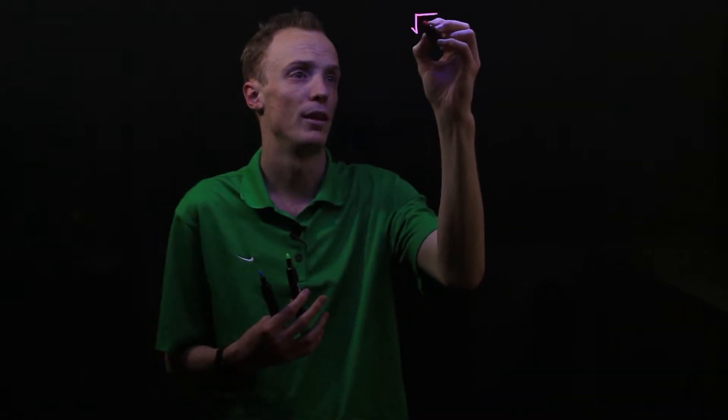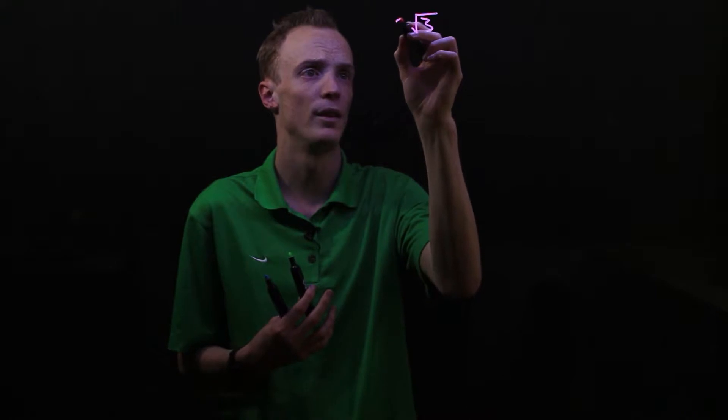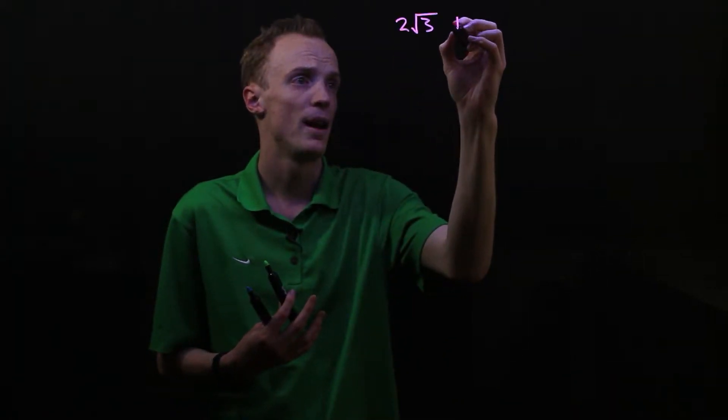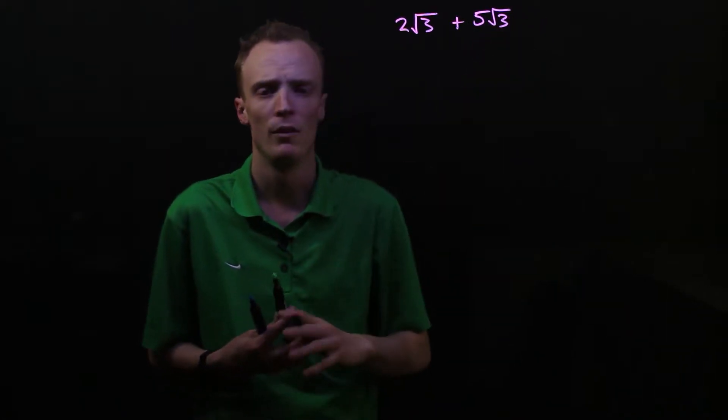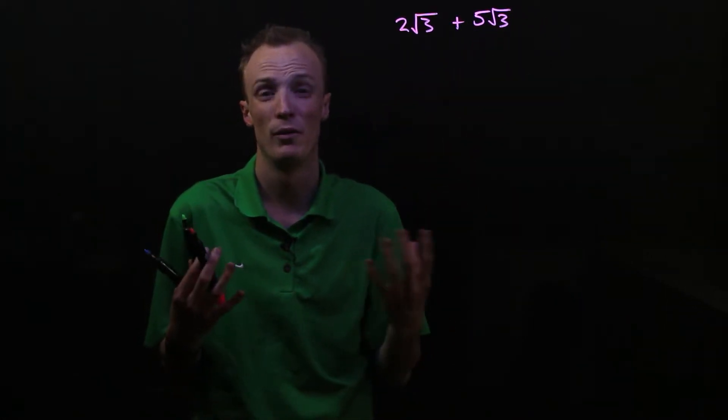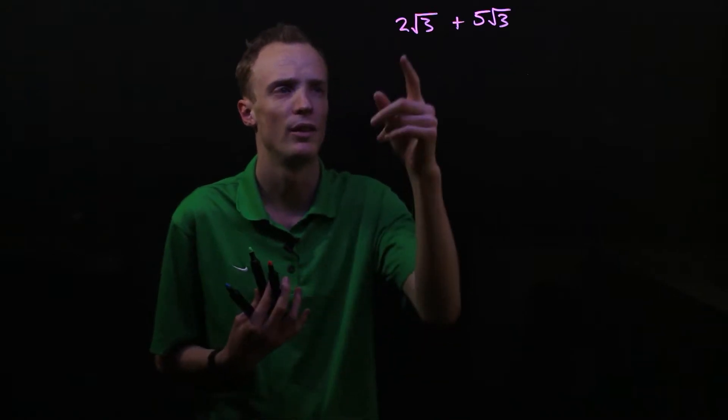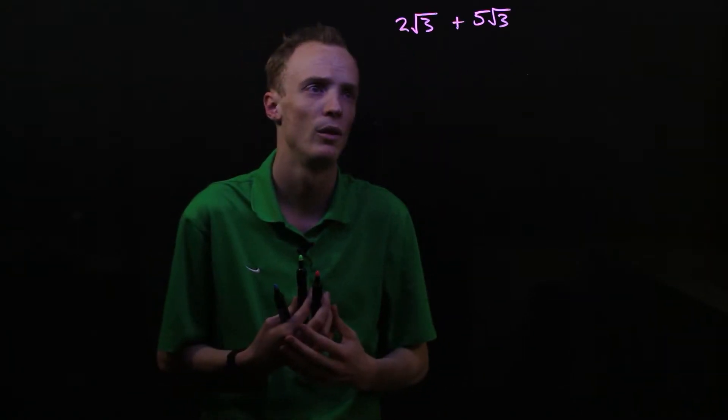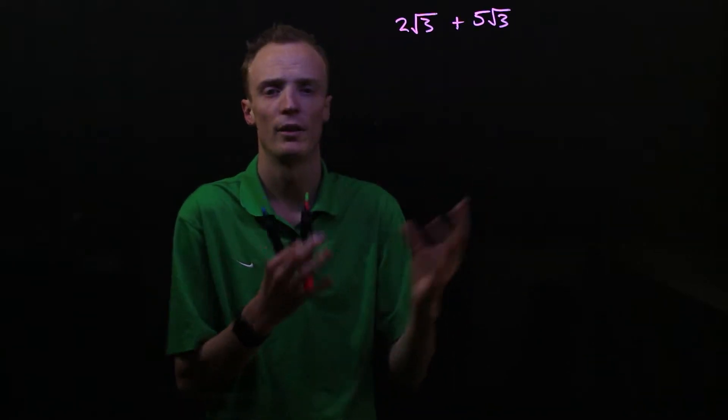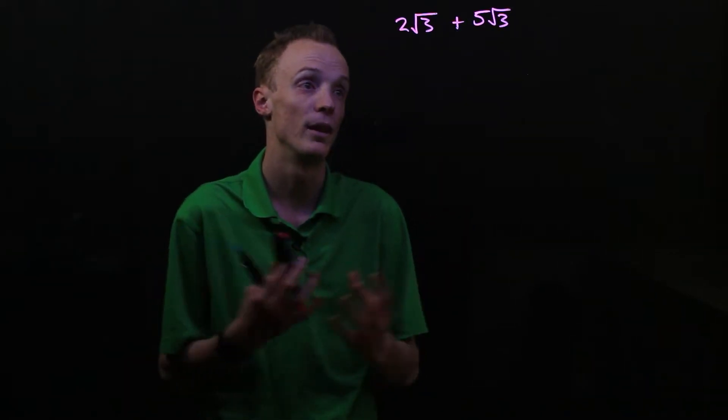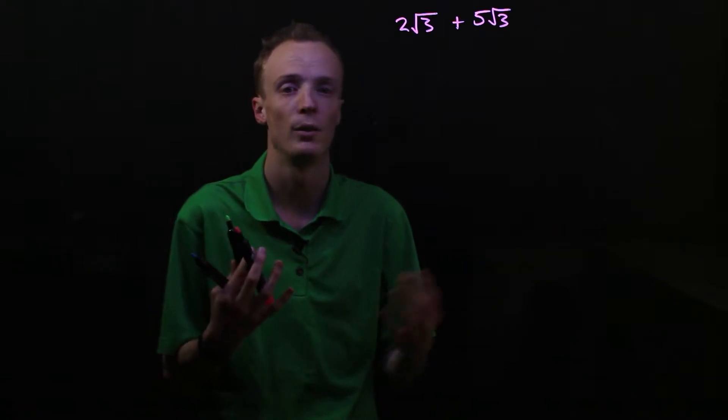For example, if I had 2√3 and I'm adding it with 5√3, if I considered this √3 to be a variable such as x and I said this was 2x plus 5x, we would say that using our algebra skills we've got like terms here of x, so we collect them together and say we've got 7 lots of x, or 7x.